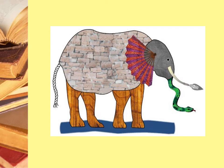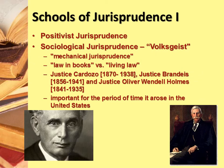Here are the major schools of legal jurisprudence. The first we've already talked about: positivist jurisprudence. Remember HLA Hart and John Austin — law is law if it's enforced; if it's not enforced, it's not law. What part of the elephant did they touch? Enforcement. That element becomes determinant of whether law is law.